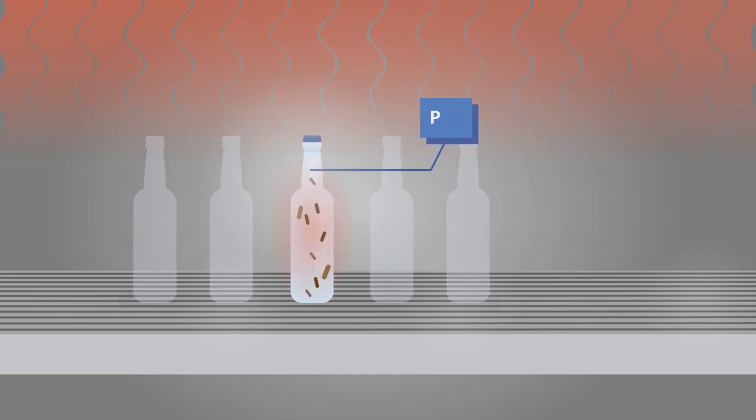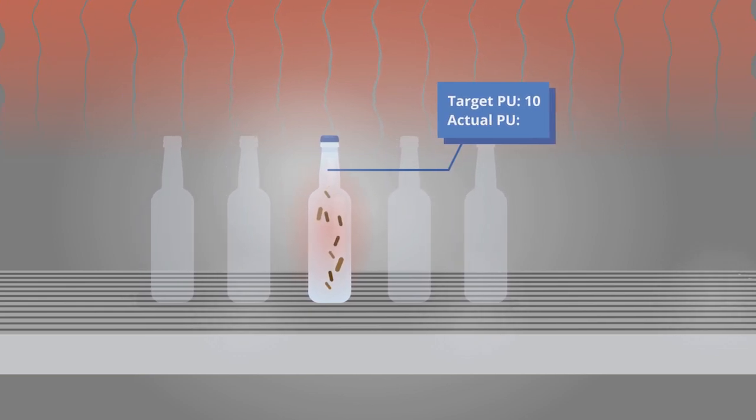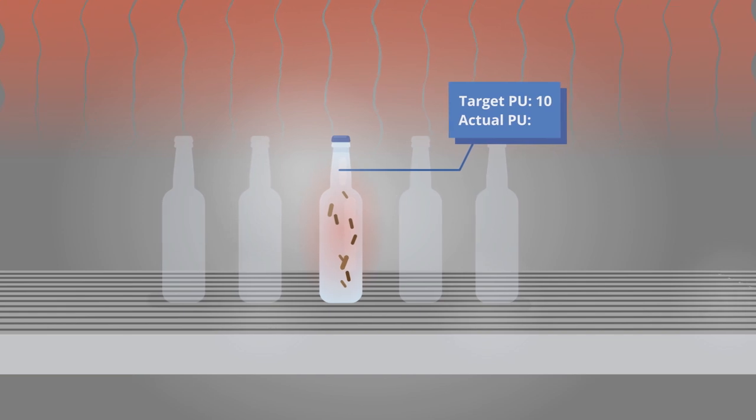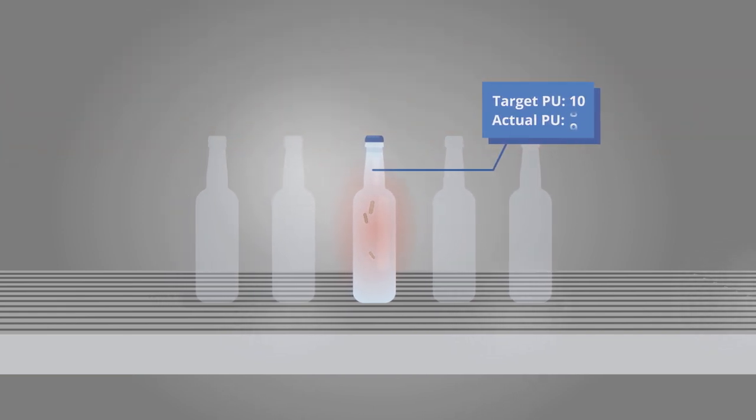The required amount of PUs could be achieved with the utmost precision if there were no stops during pasteurization. The bottles could then be evenly brought to the right temperature and their target PU level thus achieved.